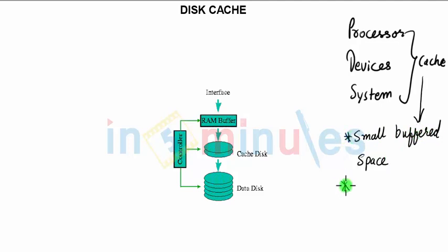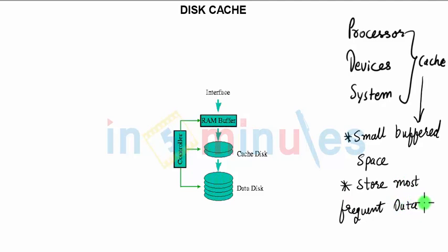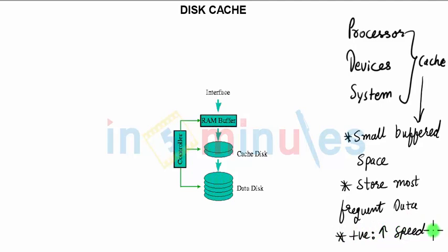What does cache save? It basically stores the most frequent data or operations. There are concepts like data cache, instruction cache, and others, but let's not get into that. The key point is that storing the most frequently used data will increase speed.